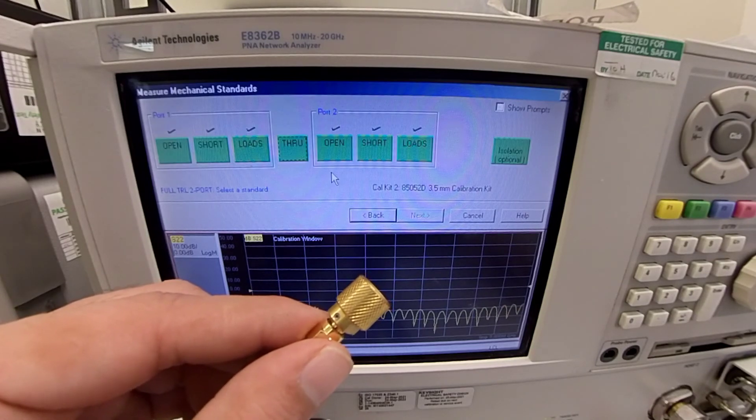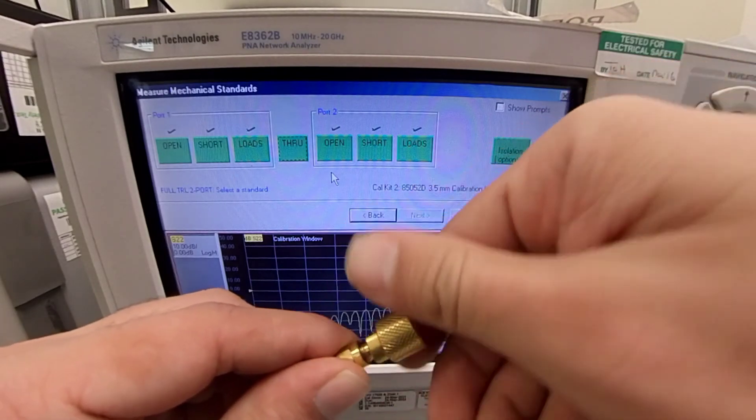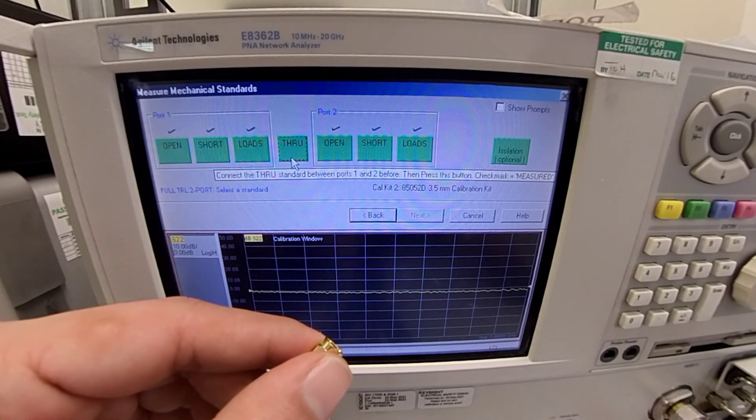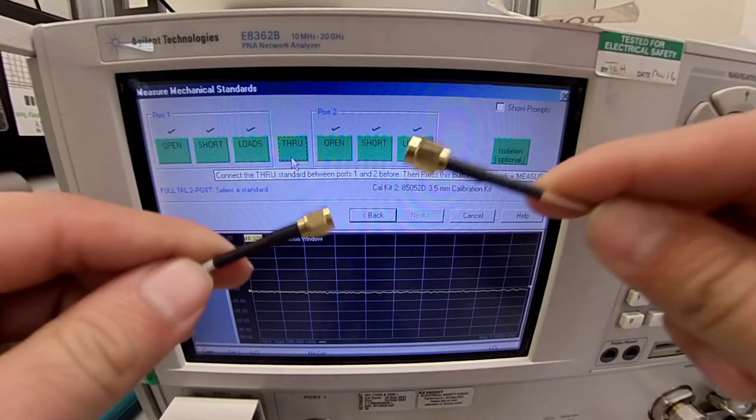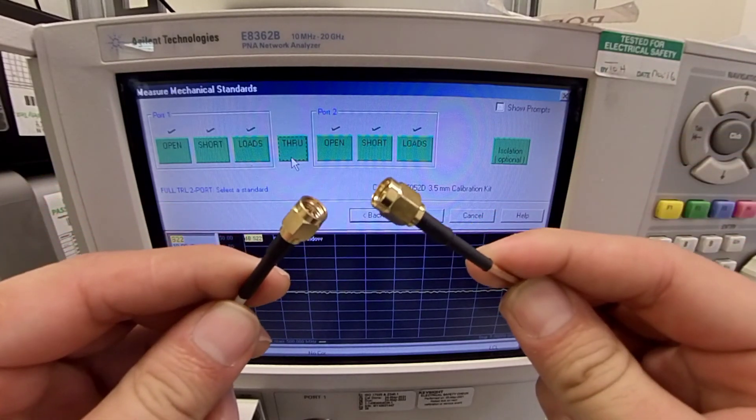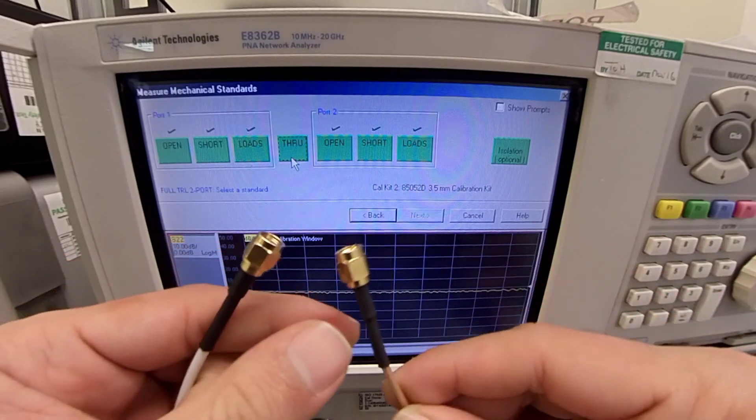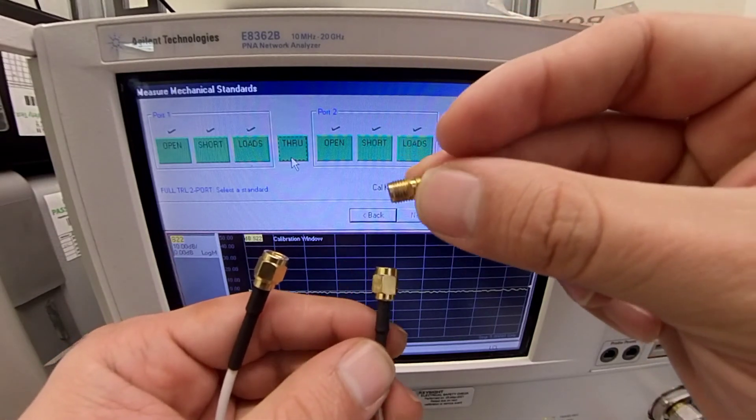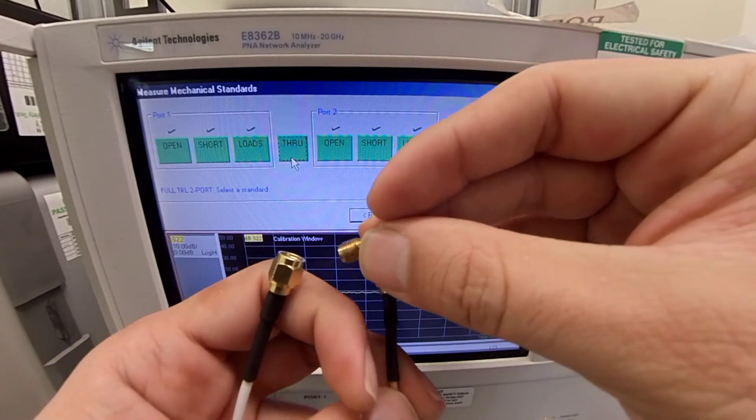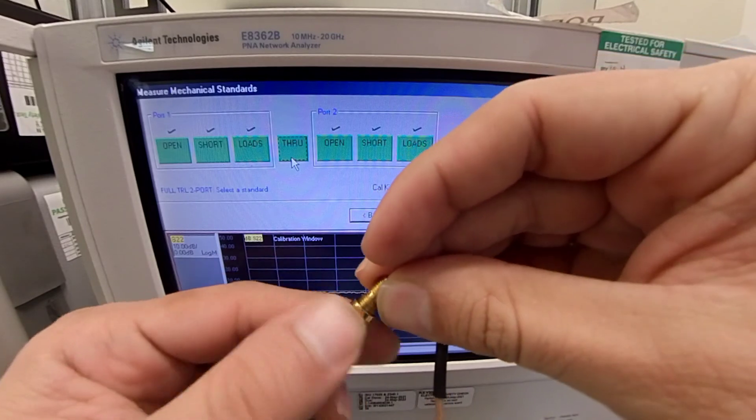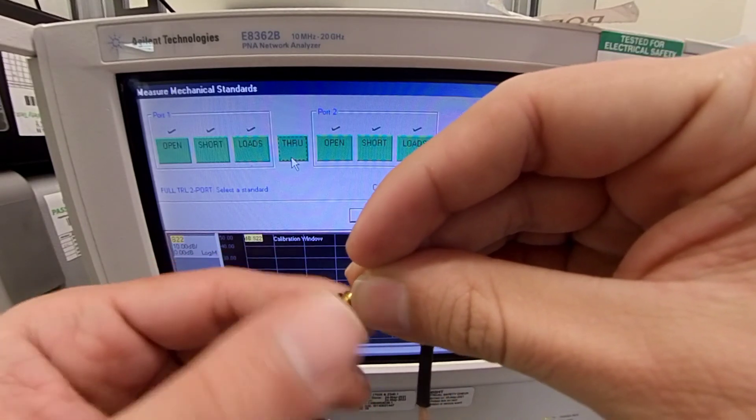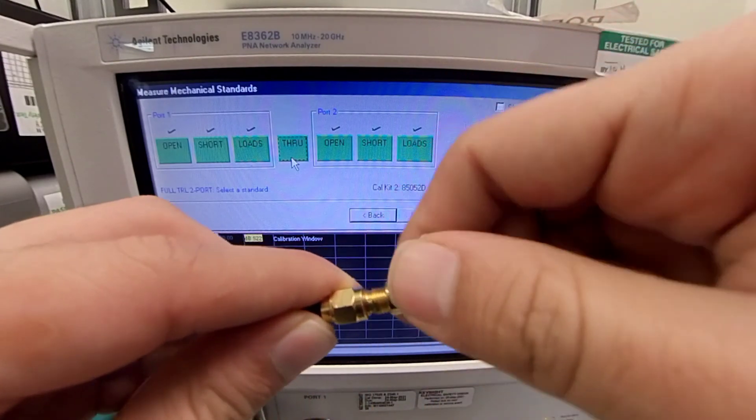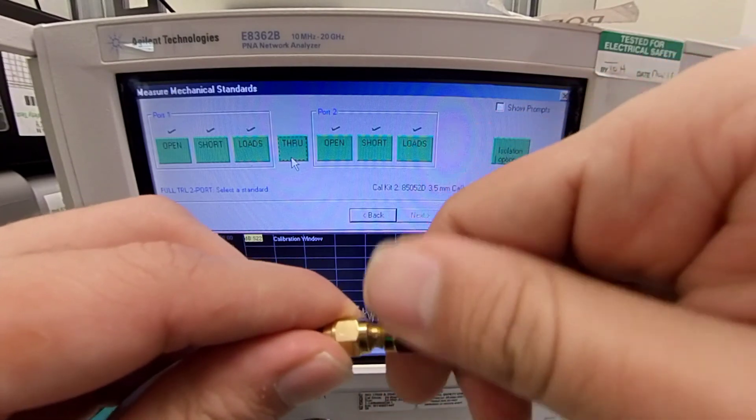And now comes the final step in the calibration process. The through calibration, you can see on the screen, requires both the cables to be connected to one another. As you can see, we cannot connect them directly, but we need a connector or adapter in between. From the calibration kit, I select a specific connector that connects both the male connectors. I perform the calibration in this way. As you can see, I have connected both of the cables, which is normally called through calibration process.